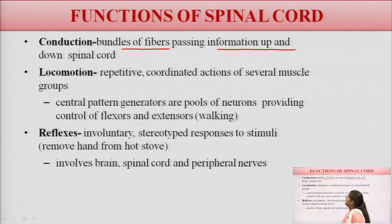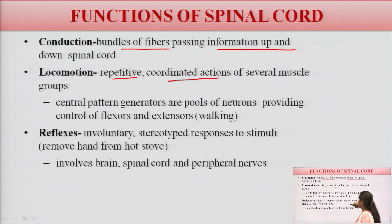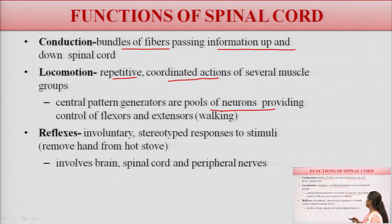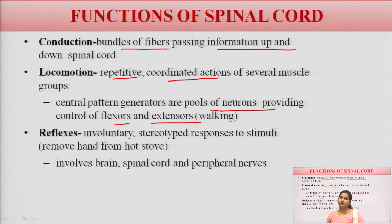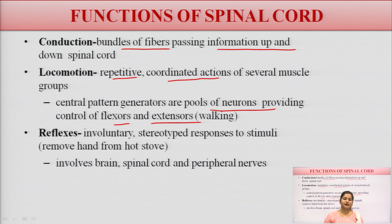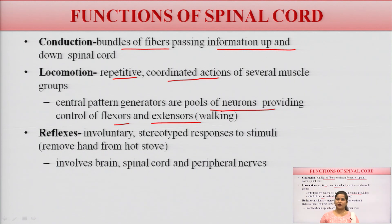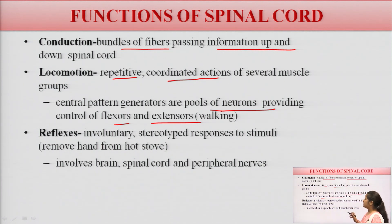Locomotion refers to repetitive coordinated actions of several muscle groups. Central pattern generators are pools of neurons that provide control of flexors and extensors, determining the speed of movement. For example, if there is a dog on the roadside, we speed up — this locomotion activity is also controlled by the spinal cord.